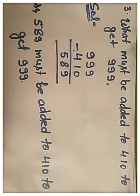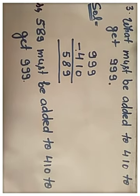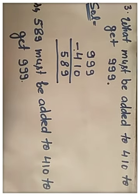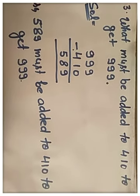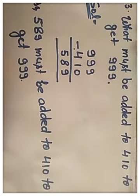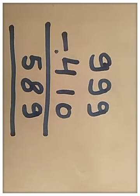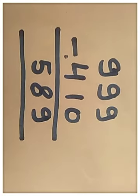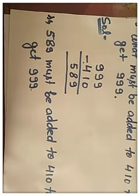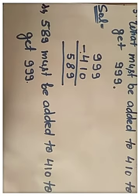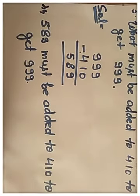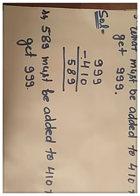Next, what must be added to 410 to get 999? If we subtract 410 from 999 then we will get 589. So if we add 589 to 410 then we will get 999.